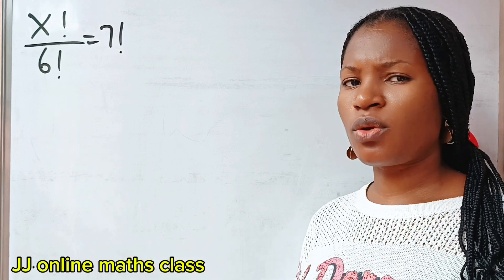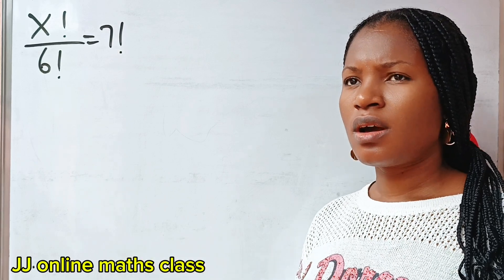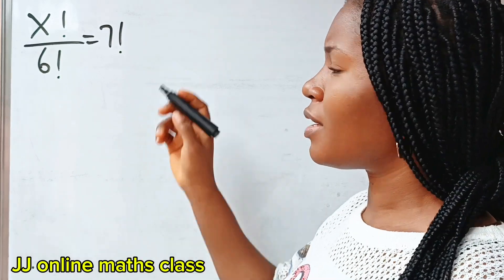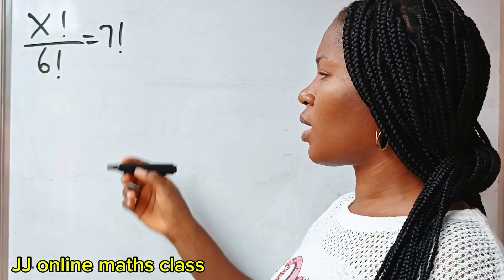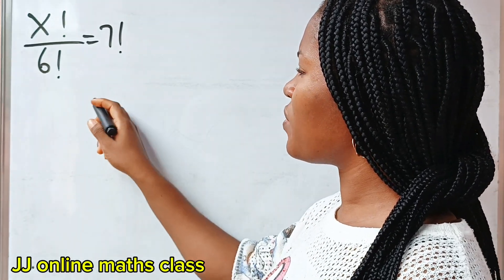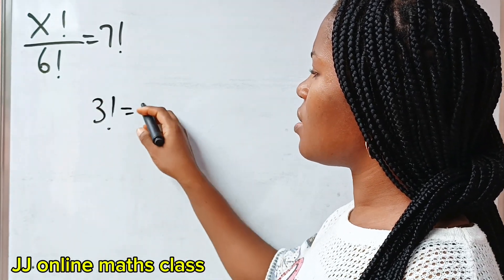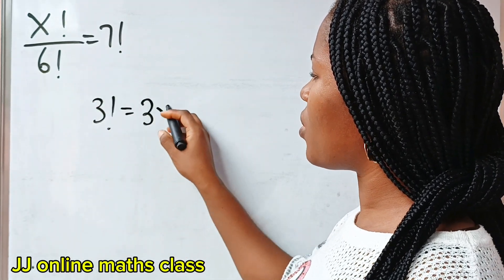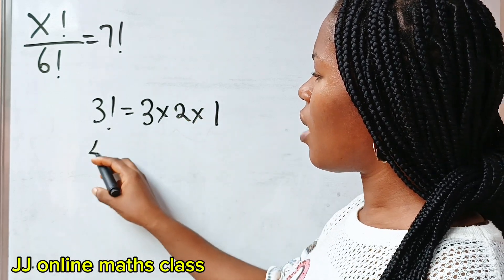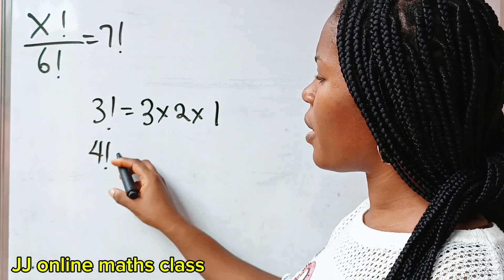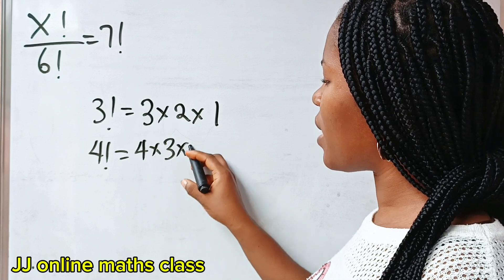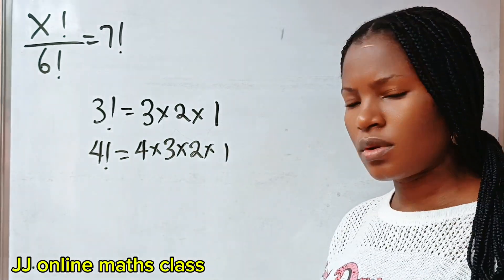Now we are going to start with what a factorial is, okay? For the benefit of those that do not know: for example, if you say 3 factorial, this simply means 3 multiplied by 2 multiplied by 1. Now 4 factorial is 4 multiplied by 3 multiplied by 2 multiplied by 1.